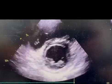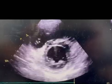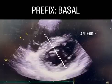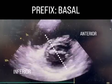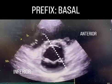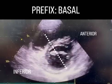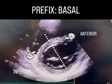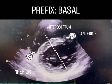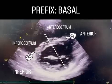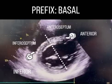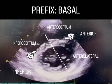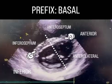To better understand regional wall motion abnormalities in the short axis view, we divide it into two sections. The first segment is the basal anterior wall and the second segment is the basal inferior wall. The interventricular septum starts where the right ventricle attaches to the left ventricle. The segments seen here are the basal antero septum and the basal infero septum. We then move to the lateral portions of the left ventricle where we see the basal anterolateral wall and the basal inferolateral wall.